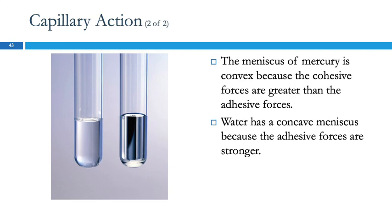You'll see different shapes of a meniscus if you have a plastic test tube versus a glass test tube, because some plastics are hydrophobic and some are hydrophilic — some like water and some don't.